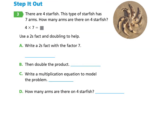Please turn to page 64, under Step It Out, question three. There are four starfish. This type of starfish has seven arms, so each starfish has seven arms — important to know. How many arms are there on four starfish? They give us a model of four starfish each with seven arms, with the answer blocked out. The instructions say to use a twos fact and doubling to help.